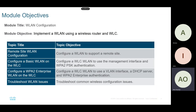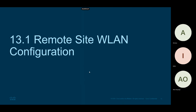We'll configure the WLC wireless LAN controller to use VLAN interfaces, a DHCP server, and WPA2 enterprise authentication. These are very important assignments for our learning. We'll also troubleshoot common wireless issues as we move on. This lab is about remote site WLAN configuration.